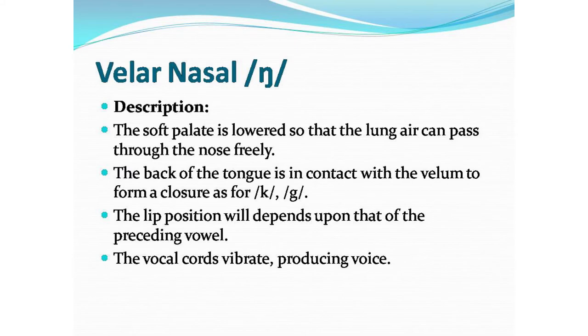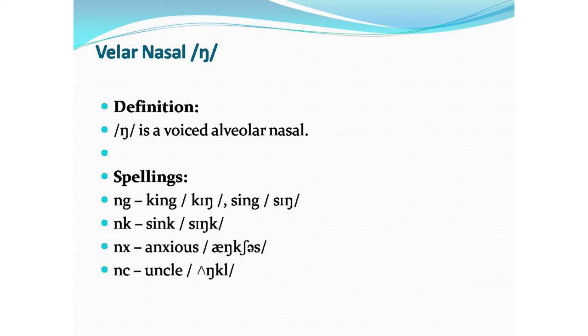The third nasal sound is /ŋ/ — velar nasal. The soft palate is lowered so that the lung air can pass through the nose freely. The back of the tongue is in contact with the velum to form closure, as for /k/ and /g/. The lip position depends upon the preceding vowel. The vocal cords vibrate producing voice. /ŋ/ is a voiced velar nasal. Spellings: NG in king, NK in sink, NX in anxious, NC in uncle.